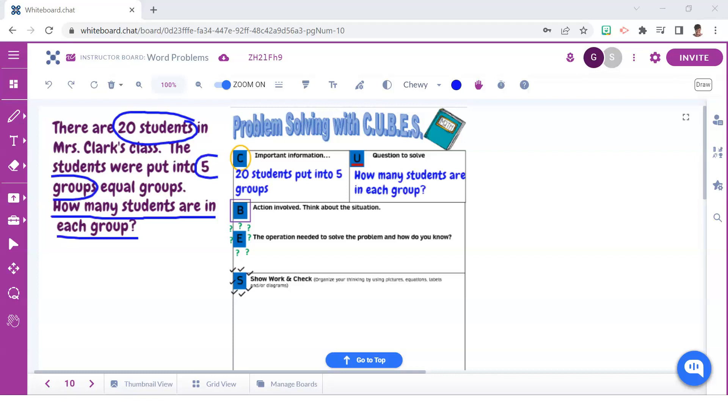Let's assume that we've already circled the key information as well as identified the question by underlining it. Now giving close attention to the B and E sections, students must box the action words that are involved. As we can see, the students were put into five equal groups.